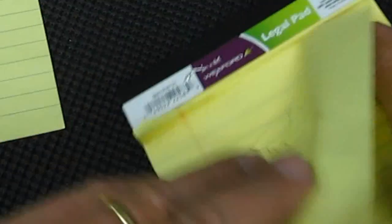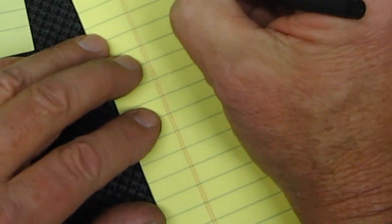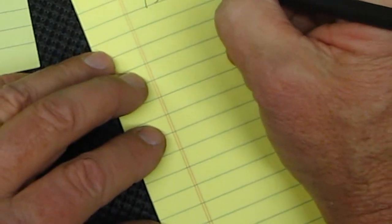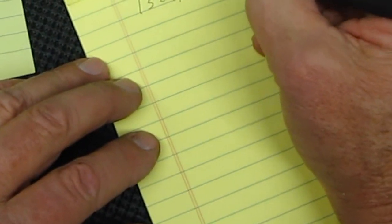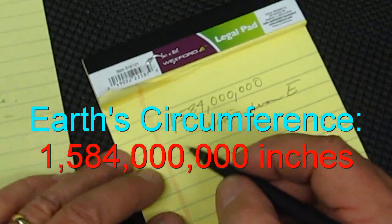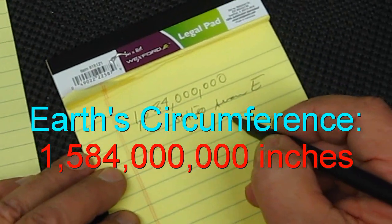...four inches. Okay, so this is how many inches there are around Earth.